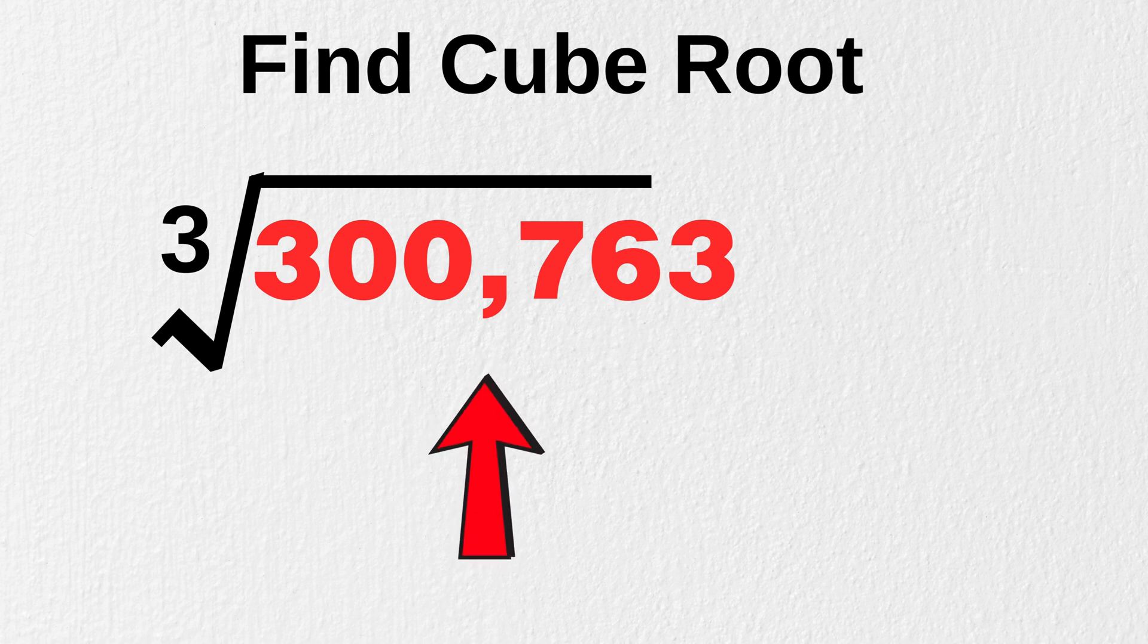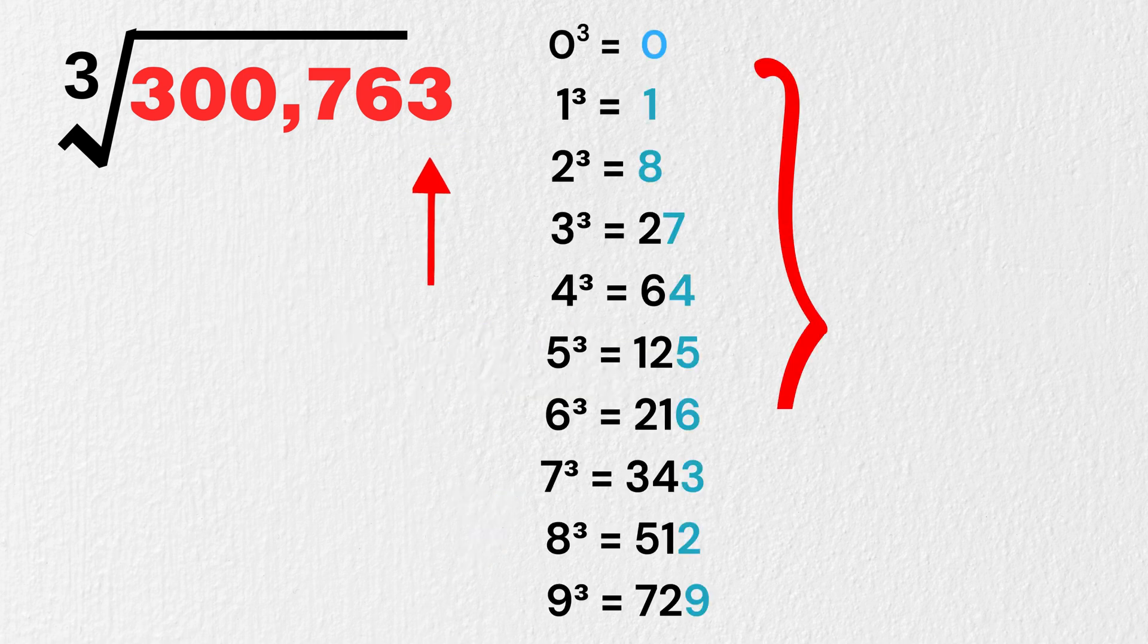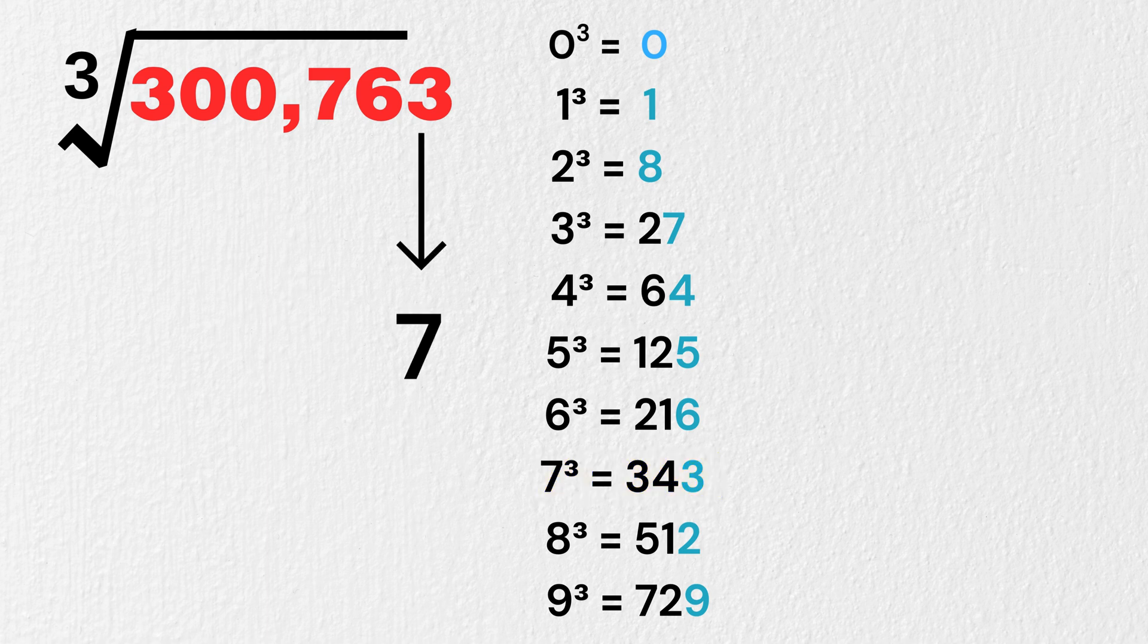You're on fire now. Let's go faster. Find cube root of 300,763. We have to look at its last digit, which is 3. Tricky? Not really. The last digit from pattern is 3. For which value here, it's 7. So, write 7 here. Now, we have to cross out last 3 digits, just like this.